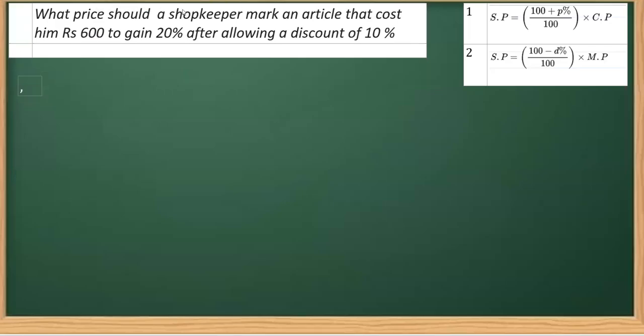This is one question taken from comparing quantities class. It asks what price should a shopkeeper mark, that means we have to get the mark price of an article that cost him rupees 600. We know the CP in this case, and the gain or profit percent is 20 percent after allowing a discount of 10 percent.